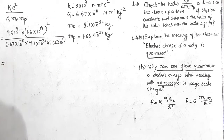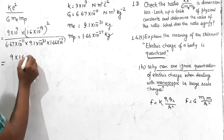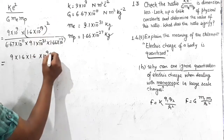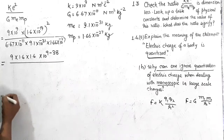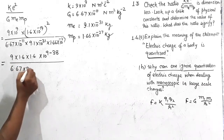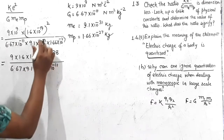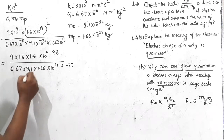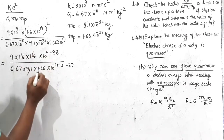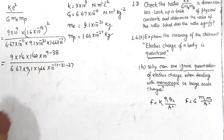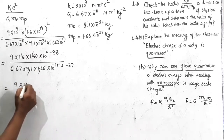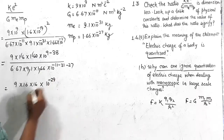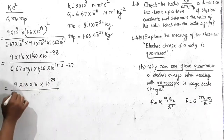Solving the numerator: we get 9 × 1.6 × 1.6, and for powers of 10: 9 from K, and since e is squared, 10⁻¹⁹ becomes 10⁻³⁸, giving 10^(9−38) = 10⁻²⁹. To remove the decimal places, we can rewrite 1.6×1.6 as 16×16 and adjust the power by −2, so the numerator becomes 9 × 16 × 16 × 10⁻²⁹ with a correction factor.